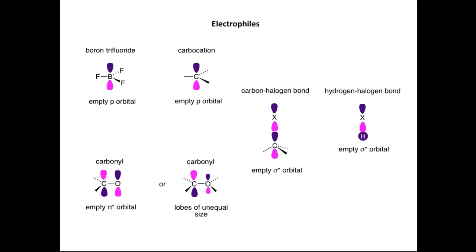Finally, we'll look at a couple of other electrophiles: a carbon-halogen bond and a hydrogen-halogen bond. In a carbon-halogen bond, we're looking at nucleophiles interacting with the empty sigma-star orbital, as drawn here. In a hydrogen-halogen bond, we're again looking at an empty sigma-star orbital, with the s-orbital on hydrogen and the p-orbital on the halogen.